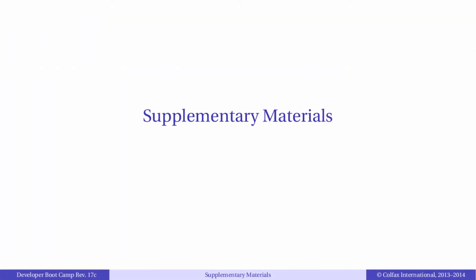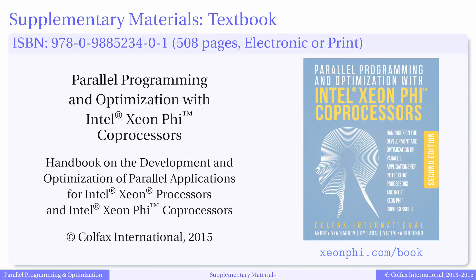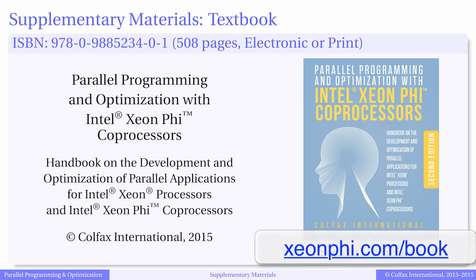The materials used in this video course are a few select excerpts from our textbook Parallel Programming and Optimization with Intel Xeon Phi Coprocessors. The textbook goes into more depth about a range of optimization techniques, some of which are not discussed in the video series. Although it is not required for this video course, we highly recommend the textbook as a supplementary resource or as a general reference to programming with Xeon Phi. The book is available from our website at xeonphi.com/book.